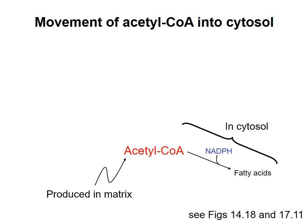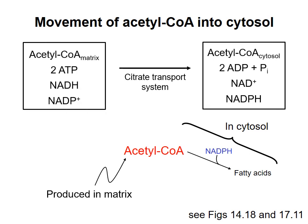This happens by a process called the citrate transport system. The idea here is similar to that of the malate-aspartate shuttle, which moves electrons from cytosolic NADH into the matrix. In the citrate transport system, a series of chemical reactions and transport steps occur, the net result of which is hydrolysis of two ATP molecules to ADP to drive movement of acetyl-CoA from the matrix into the cytosol.